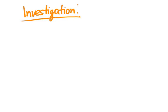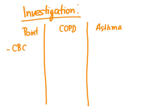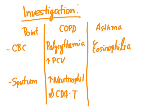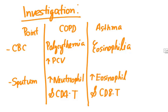For investigations, starting with CBC: in COPD we will find polycythemia and increased packed cell volume, but in asthma we will find eosinophilia. Importantly, in COPD we will never find anemia — if the patient has anemia, there is a chance they are heading toward bronchial carcinoma. In sputum examination, COPD shows increased neutrophils and CD4 T-lymphocytes, especially during infection which is common in COPD. In asthma, we find increased eosinophil count and increased CD8 lymphocyte count.